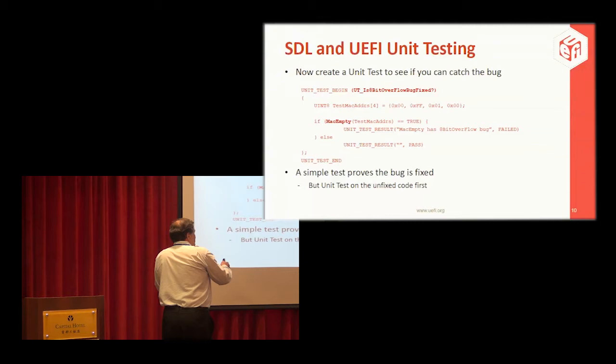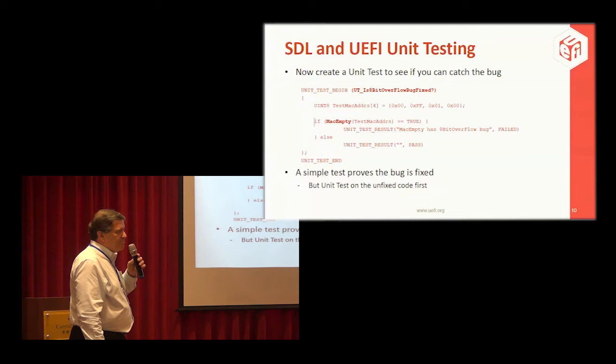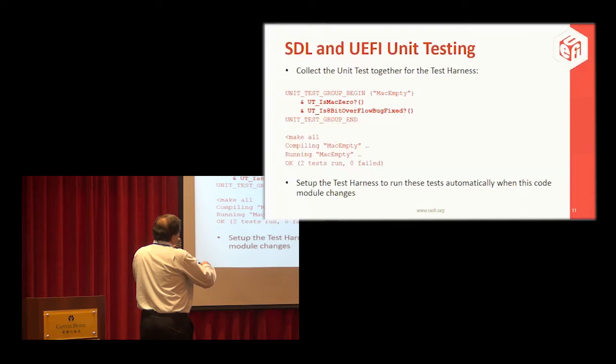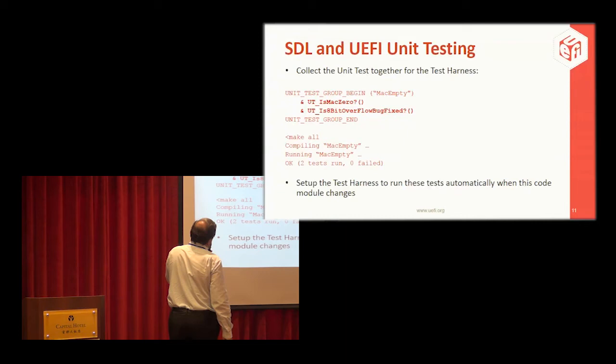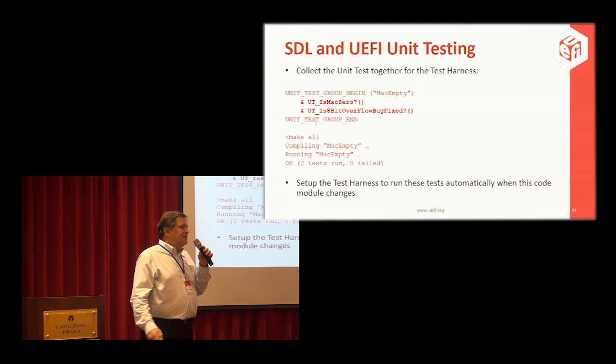Make sure you run the unit test on the unfixed code first, because you've got to test your test code. So we collect the unit tests together: a test group called MAC empty, a test for the normal case called is_MAC_zero, and a test for the overflow bug fix. We compile it, execute it, and set up the test harness to run these tests automatically when this module changes — just a press of a button.